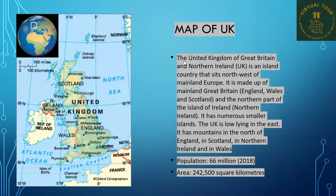Here is the map of the UK. The United Kingdom is an island country that sits north-west of mainland Europe. It is made up of mainland Great Britain — England, Wales, and Scotland — and the northern part of the island of Ireland. It has numerous smaller islands. The UK is low-lying in the east, with mountains in the north of England, in Scotland, in Northern Ireland, and in Wales. It has a population of 66 million and an area of 242,500 square kilometres.